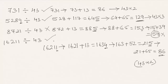We can conclude: to check whether a number is exactly divisible by 43, add 13 times the last digit to the remaining number. If the result is divisible by 43, then the original number is also divisible by 43. Hope you liked the presentation — do like and subscribe to vteachacademy.com. Thanks for watching, have a nice day.